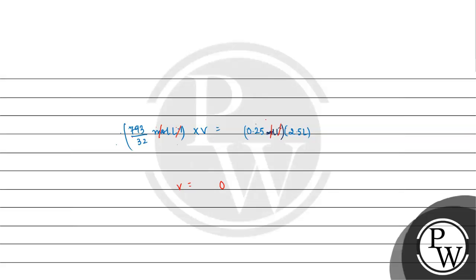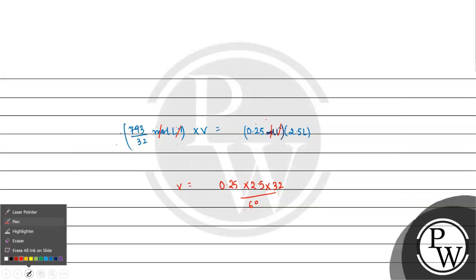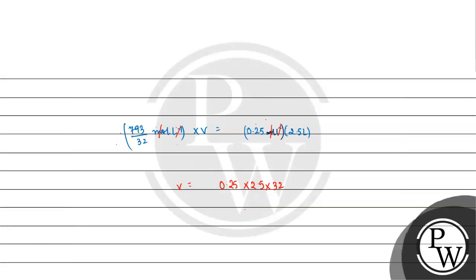V equals 0.25 times 2.5 times 32 divided by 793. The final answer in liters is 0.025 liters.